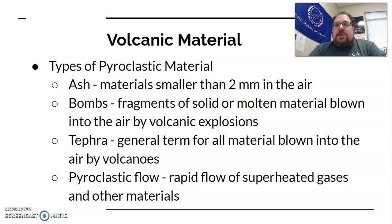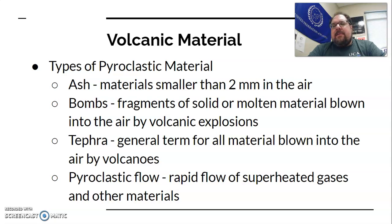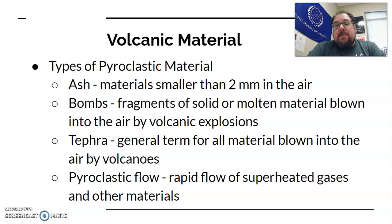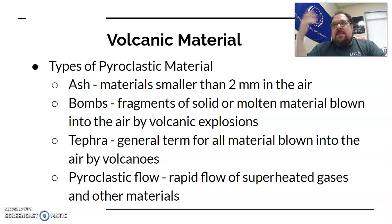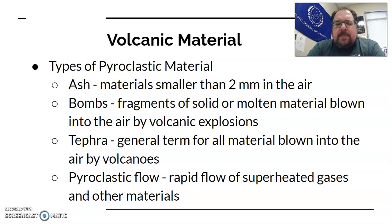There are a couple of types of pyroclastic materials. Ash is dangerous — very dangerous for airplanes. Back around 2014, a big volcanic eruption in Iceland sent very fine ash into the air above northern Europe, and jet airplanes could not fly through it because the ash would clog jet engines and cause them to fail. People were stuck in Europe for two or three weeks while they waited for the ash to dissipate.